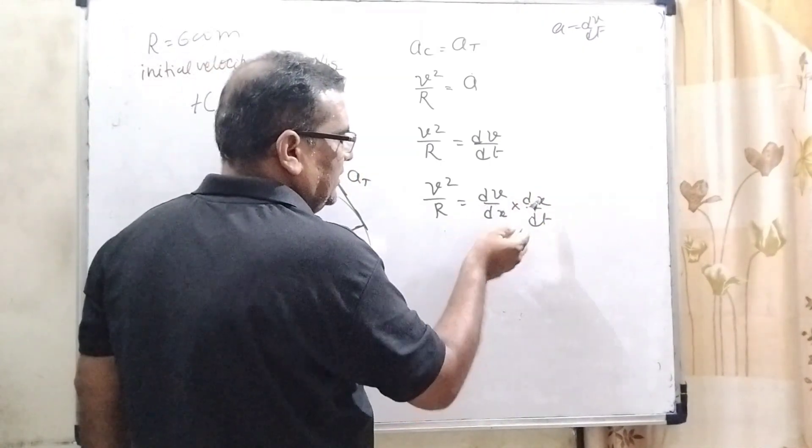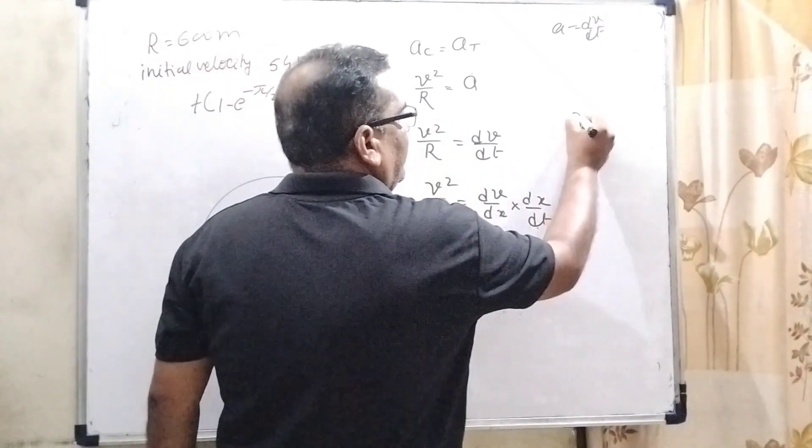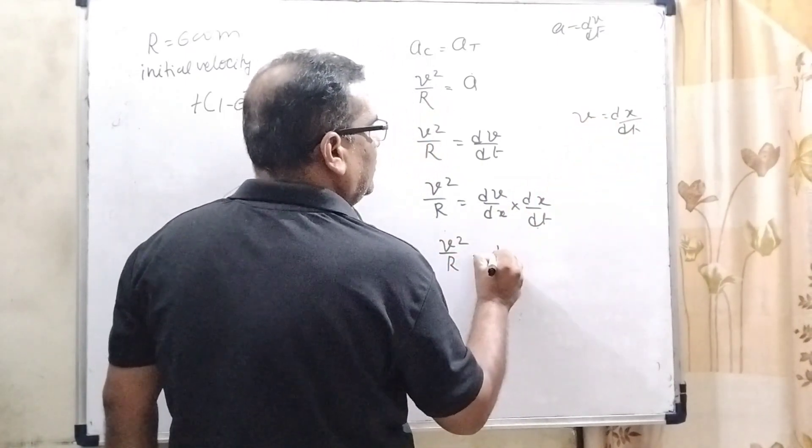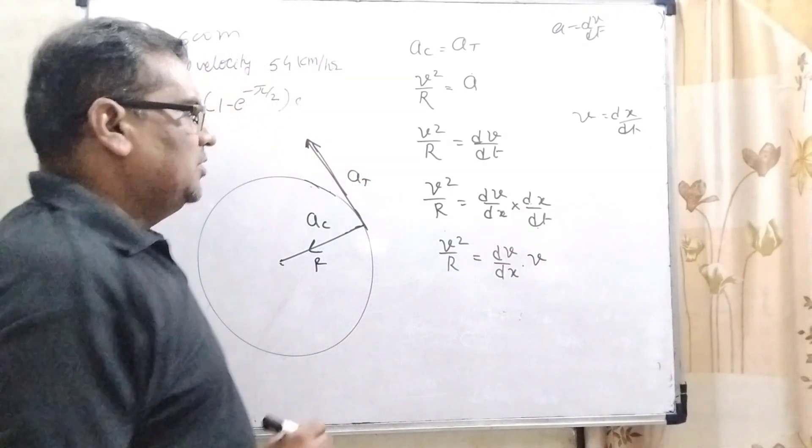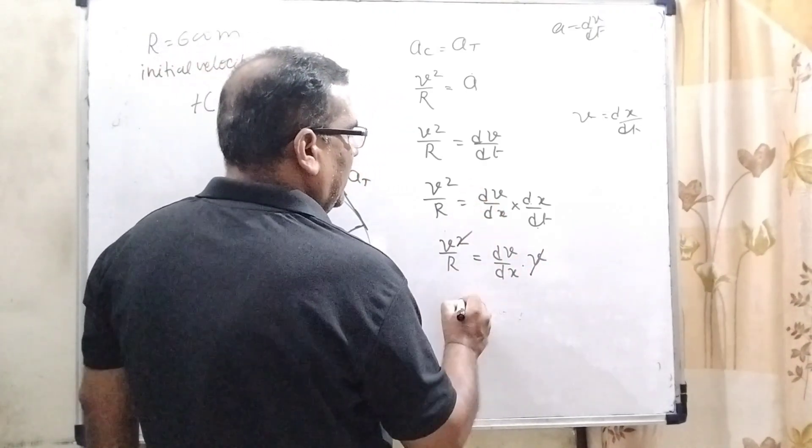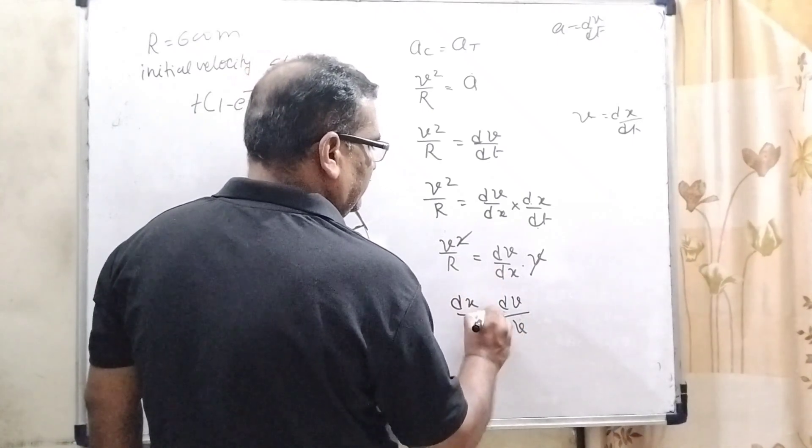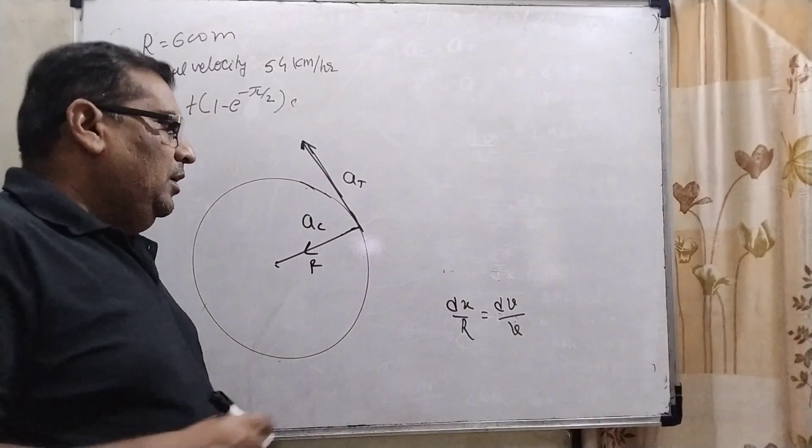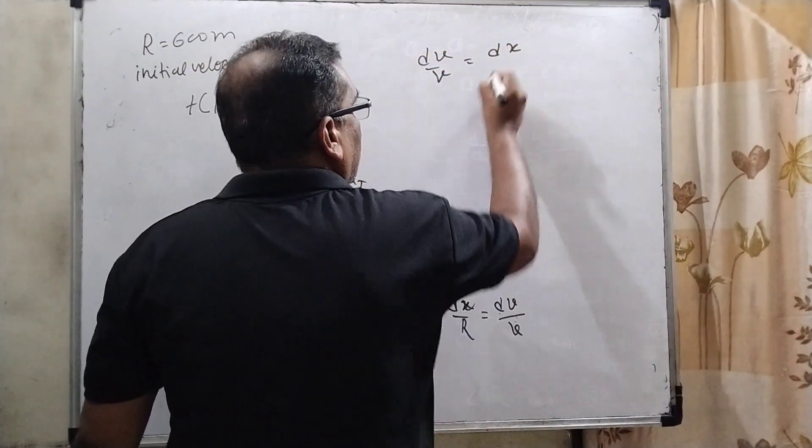This is the chain rule. And dx/dt, we know, is velocity. So v²/r = (dv/dx)v. Here one v is cancelled out and only one v remains. So v/r = dv/dx, or rearranging, dv/v = dx/r.